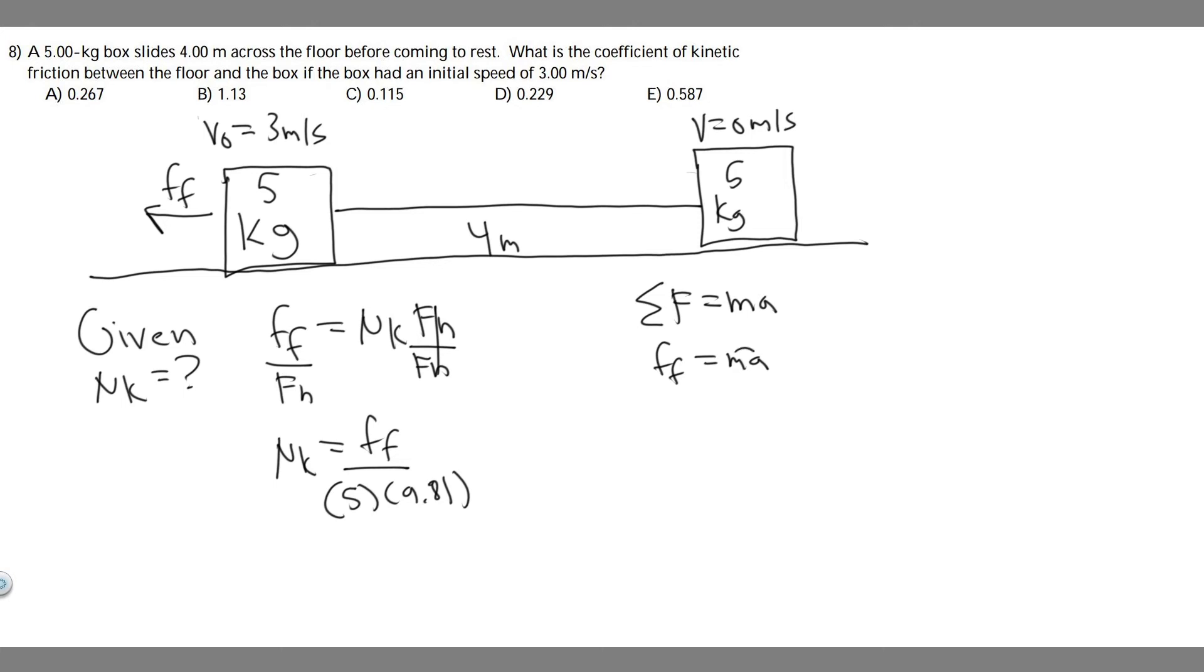We need to find the acceleration because we know the mass but we don't know the acceleration. We're going to do that using the variables they give us. We know the initial velocity, the distance it travels, and the final velocity. We can use kinematics. The kinematic equation we're going to use is v squared equals v sub 0 squared plus 2a times delta x.